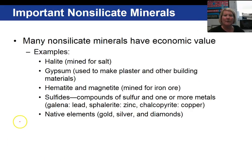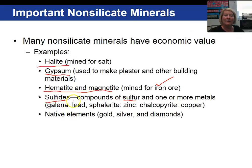Additional non-silicate minerals with economic value include salt or halite. Gypsum is used to make plaster and other building materials. Hematite and magnetite are mined for iron ore, which we use to make steel. Sulfur is extracted and sulfuric acid for industry is made from sulfide minerals. And then our native elements — gold, silver, and diamonds — have their value as well.